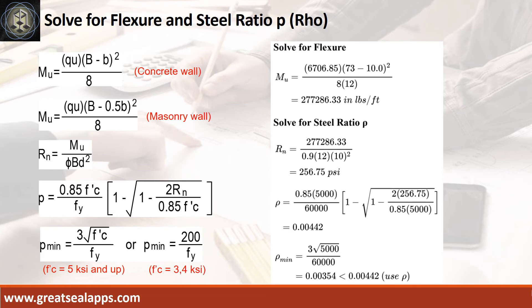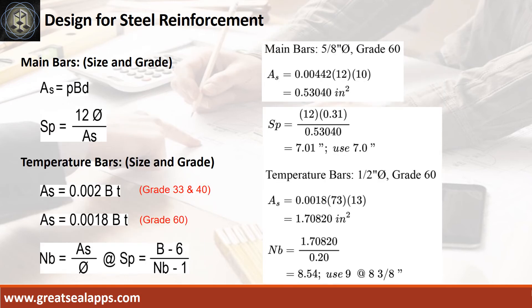Given resistance factor of 0.9, B equals 12 inches, and D equals 10 inches, the area of steel for temperature is 0.5304 square inches per foot. Given ratio Rn equals 256.75 PSF and reinforcement ratio equals 0.00442, with B equals 12 inches and D equals 10 inches, the area of steel for main bars is 0.5304 square inch and the spacing for 5/8-inch diameter bar is 7 inches. The area of steel for temperature bars is 1.7082 square inches, and the number of bars for 1/2-inch diameter is 9.